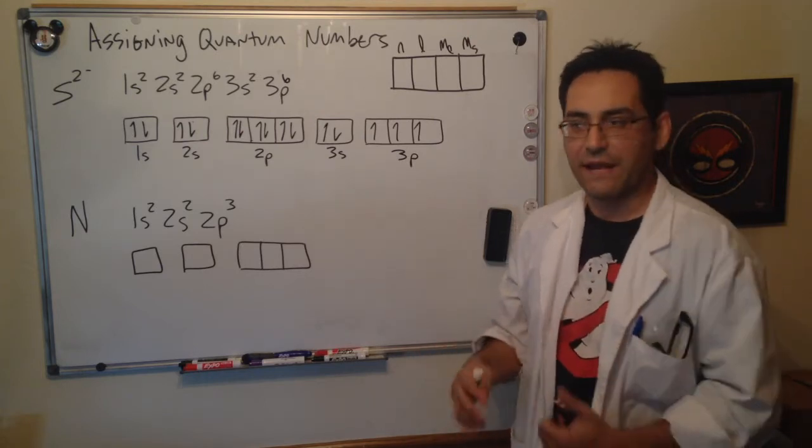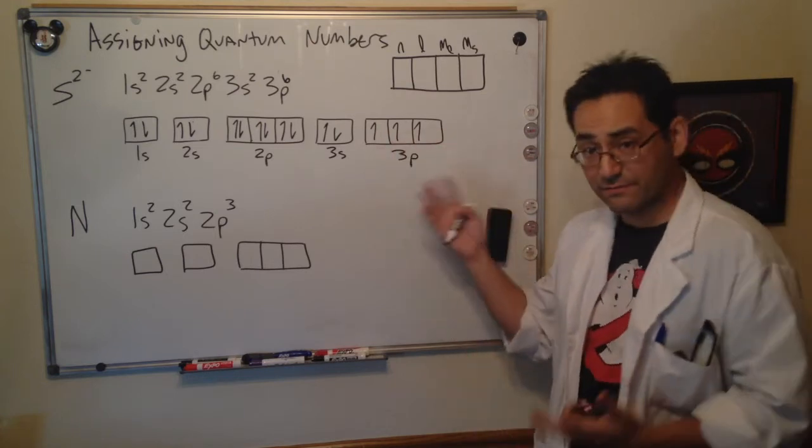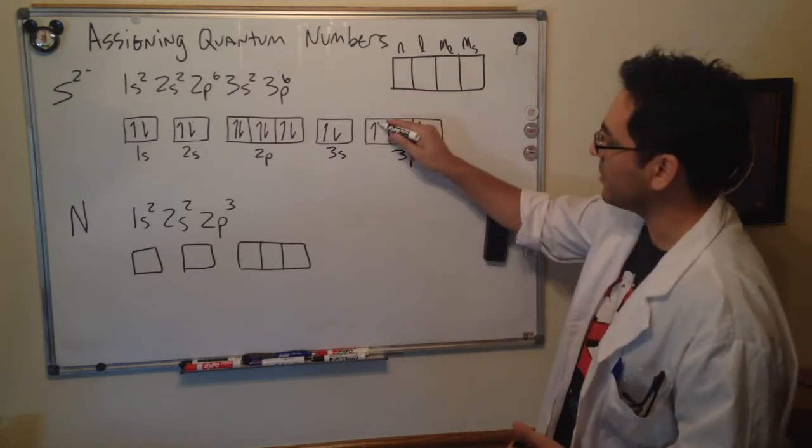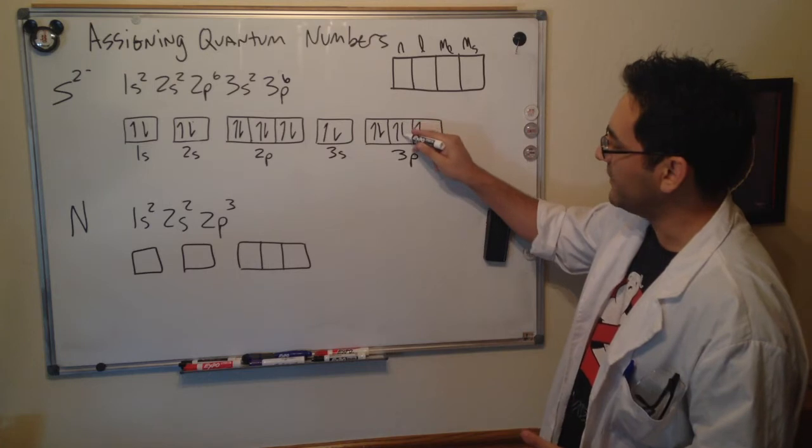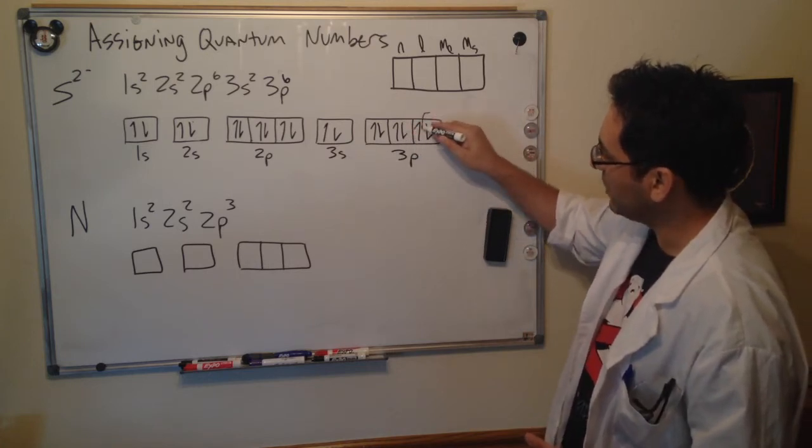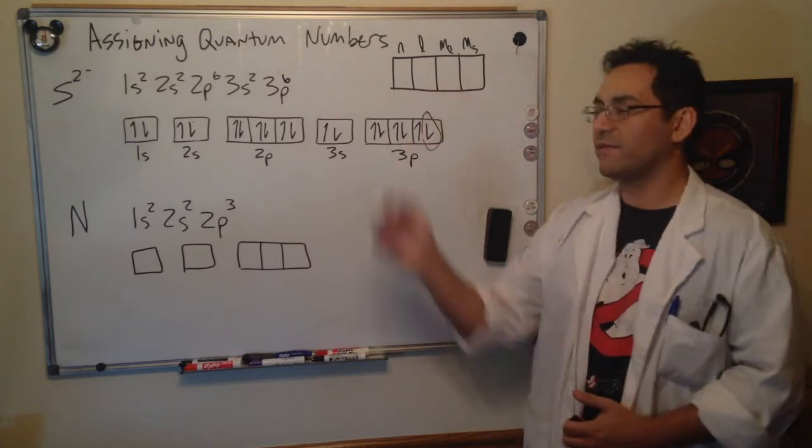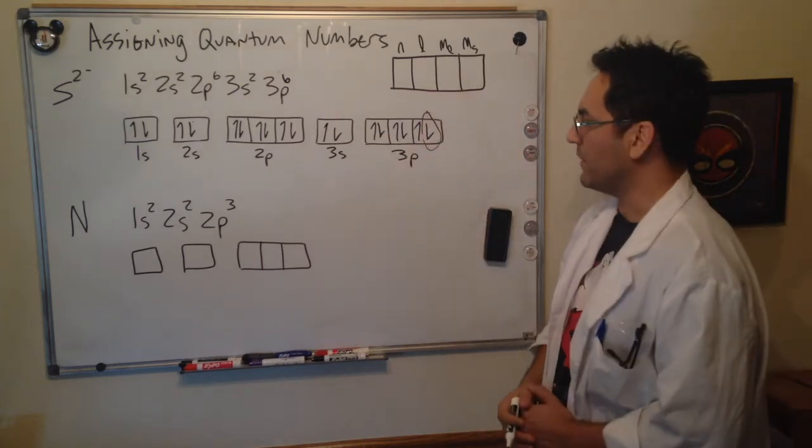Since now everything is occupied, we start pairing up electrons. This is the fifth one in and this is the sixth one in, so I'll just circle this electron. That's the one that we want to write the quantum numbers for.